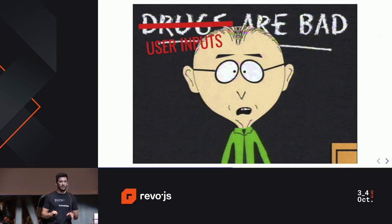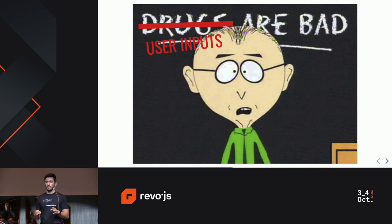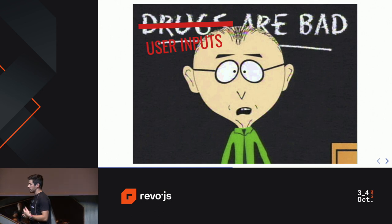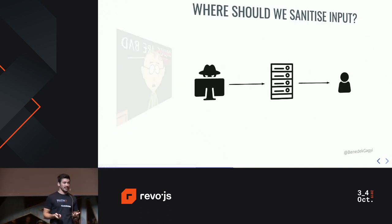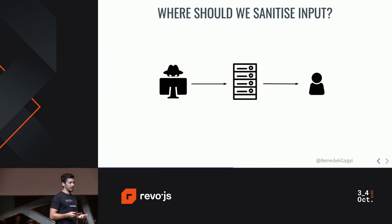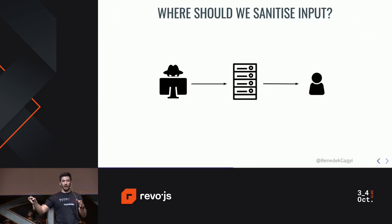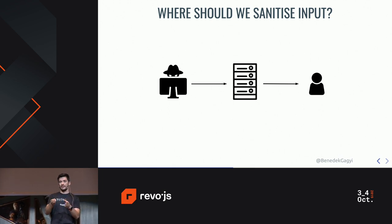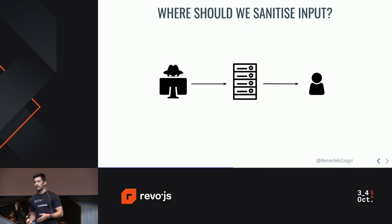User inputs are really scary. So we have to do something about them, because if the user is allowed to input anything they want, then somebody will probably try something nasty. So where should we sanitize the inputs? Basically we have three options: either on the client side before sending it, on the server, or client-side when it arrives.